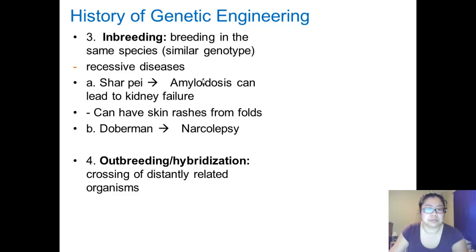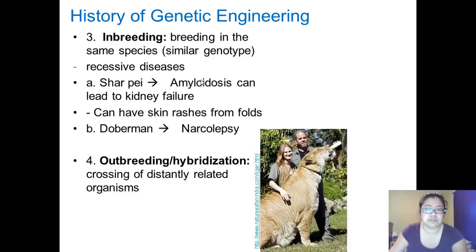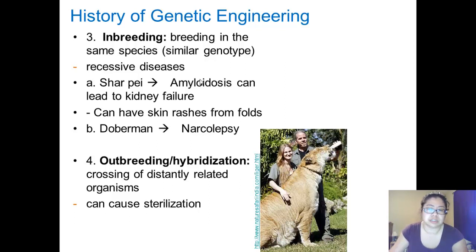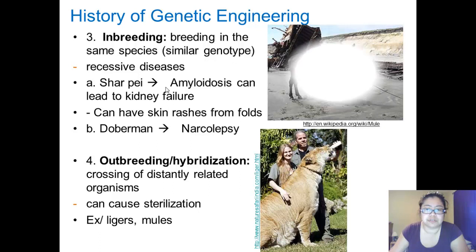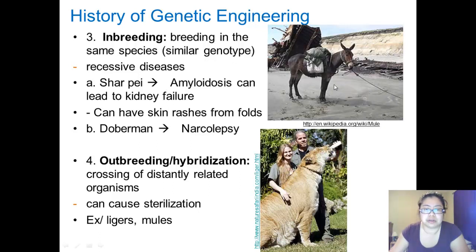The fourth type is outbreeding and hybridization — the crossing of distantly related organisms. This is an example of a liger. When a lion is bred with a tiger, the offspring is called a liger. Some of the offspring can be sterile, and some may be able to have their own offspring. However, mules — a hybrid of a donkey and a horse — are most of the time sterile. Very rarely will a mule be able to reproduce, and that is only if they are mating with a horse.